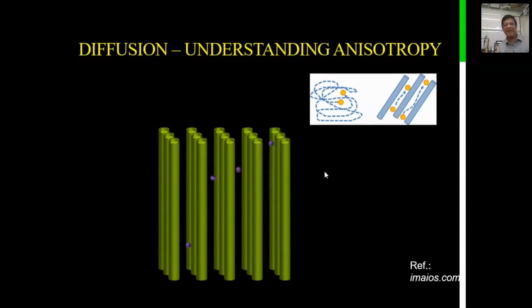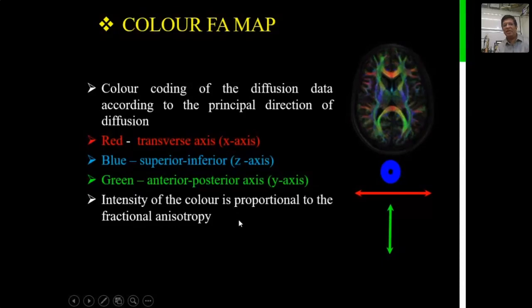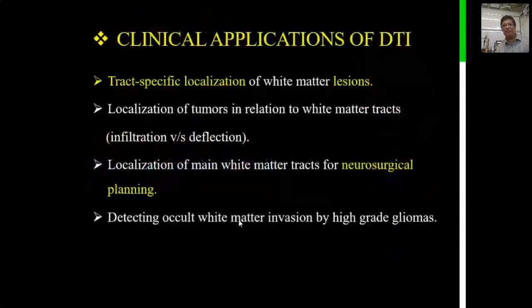We calculate fractional anisotropy (FA) to assess how diffusion behaves. Wherever diffusion is maximum — in high-grade tumors — you will see more restricted diffusion, while lesser cellularity shows facilitation. Tracts oriented in the transverse axis are labeled red, those in the superior-inferior axis are labeled blue, and those in the anterior-posterior axis are labeled green. Color intensity depends on the FA value.